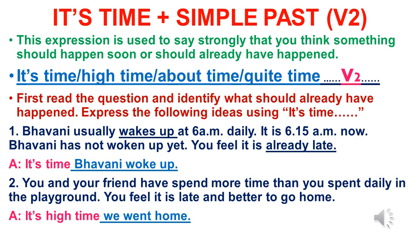Second example: You and your friend have spent more time than you usually spend daily in the playground. You feel it is late and better to go home. So the action that should have already happened is 'go home'. We can write: 'It's high time we went home.' The past form of 'go home' is 'went home'.